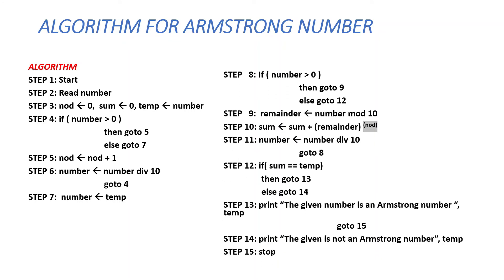If the condition in Step 8 is true, it moves to Step 9 where remainder is assigned number mod 10. Then in Step 10, sum is assigned sum plus remainder raised to the power of nod. In Step 11, number is assigned number divided by 10. It moves back to Step 8 and checks the condition again until it fails.